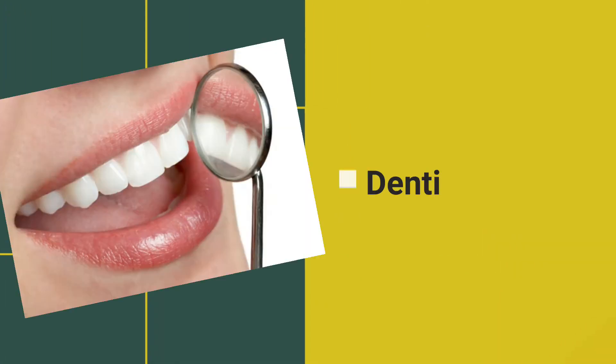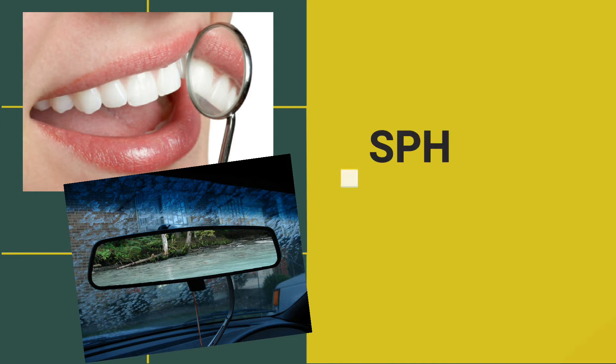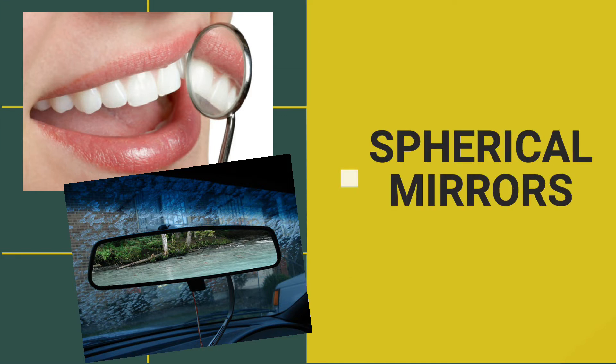Some mirrors magnify the image of an object, like the dentist's mirror, and mirrors that let us see more of what is around us and diminish the image of an object, like a rear-view mirror of a vehicle. These mirrors have curved surfaces, and they are called spherical mirrors.